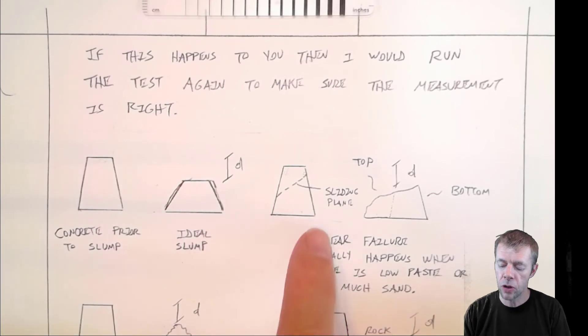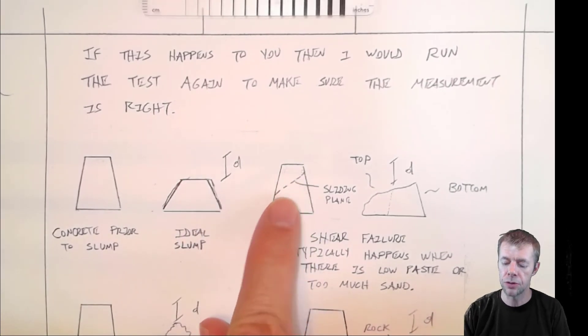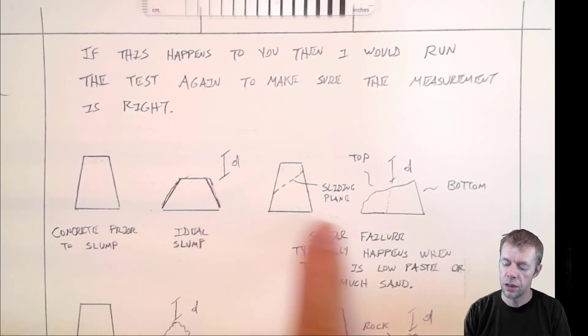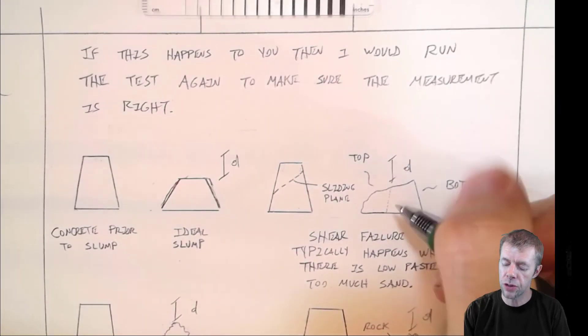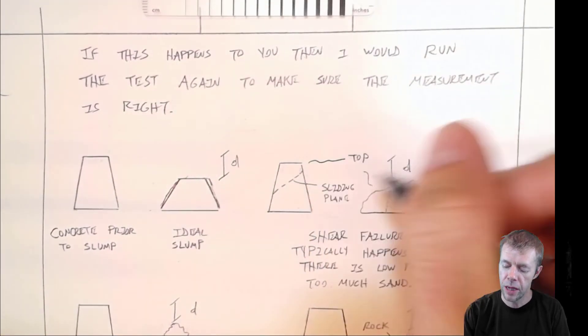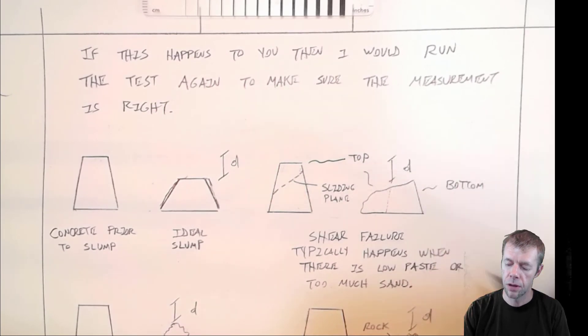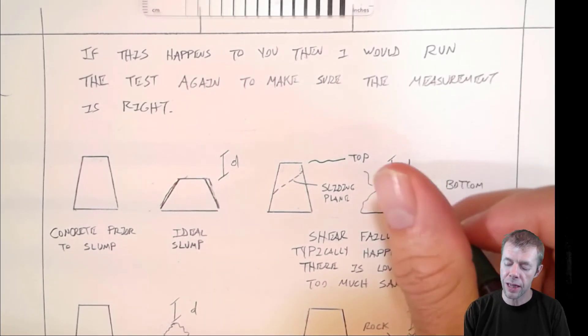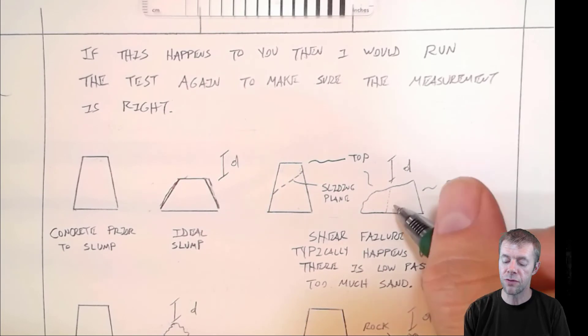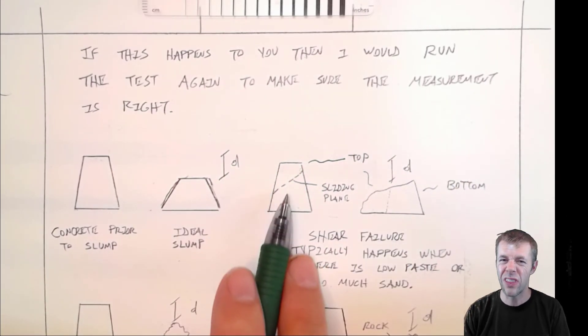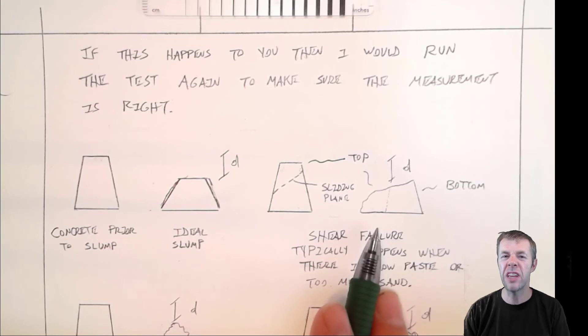Sometimes you get something called a shear failure or a sliding plane that happens. So along this plane right here, the slump actually fells and falls next to it. So what I'm showing here is this is the top. This was the top and it fell down and it's right next to where the bottom is. Okay. And if you measured again, the height, you might find that it's the same as this. But if it fell like this, that's telling you something very different. That's useful.